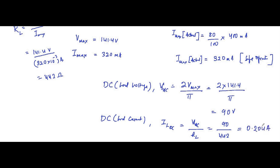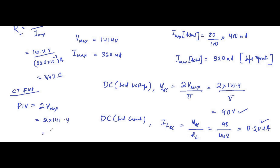This is the DC load current and this is the DC load voltage. The peak inverse voltage — as we know for a center-tapped full wave rectifier — is twice the maximum voltage, so PIV equals 2 into 141.4, which equals 282.8 volts. This is the peak inverse voltage.